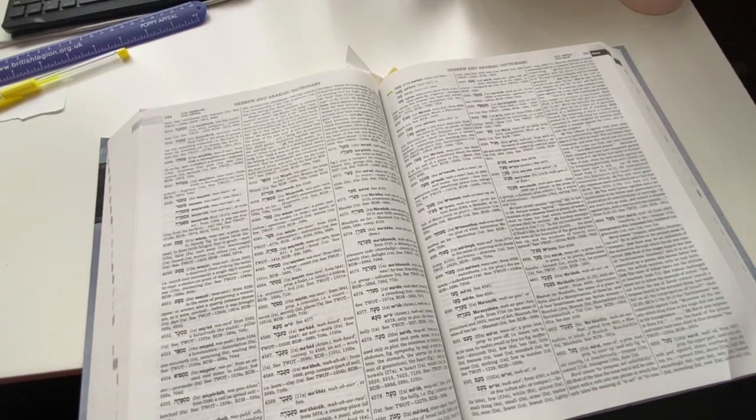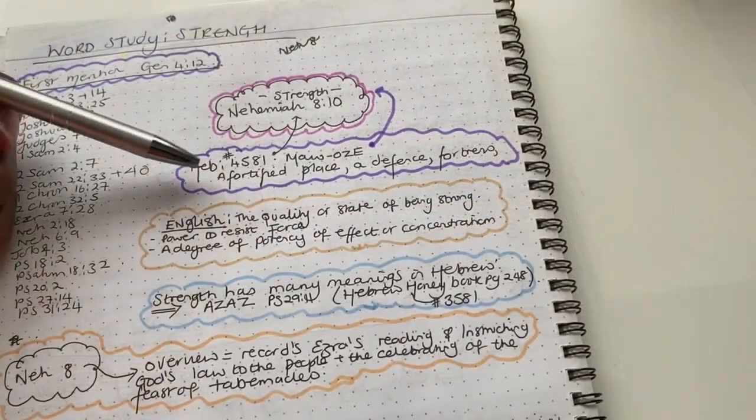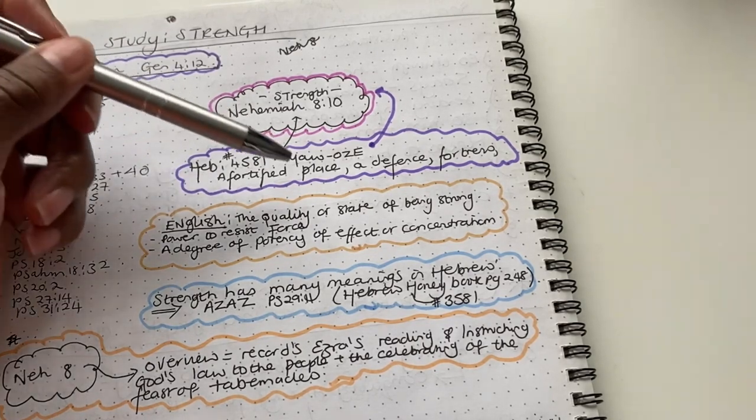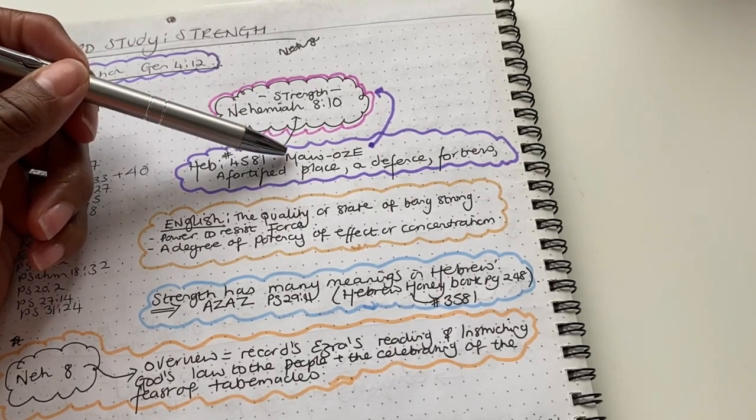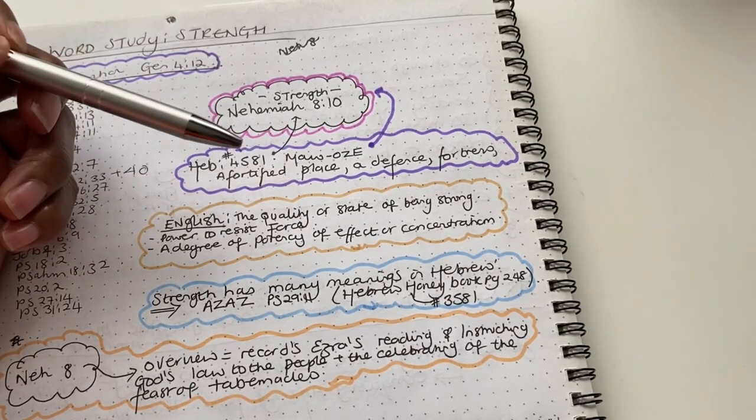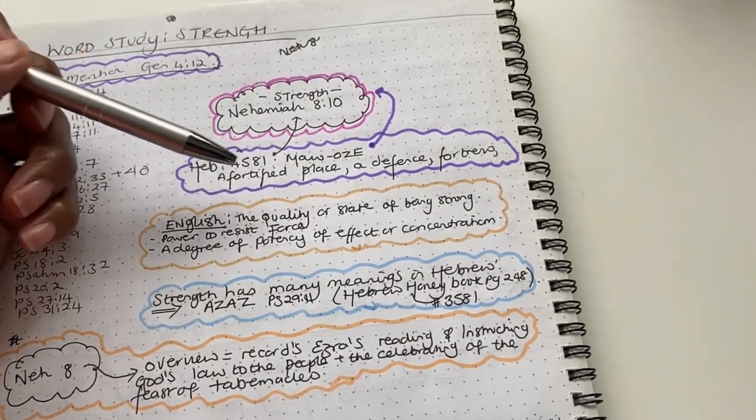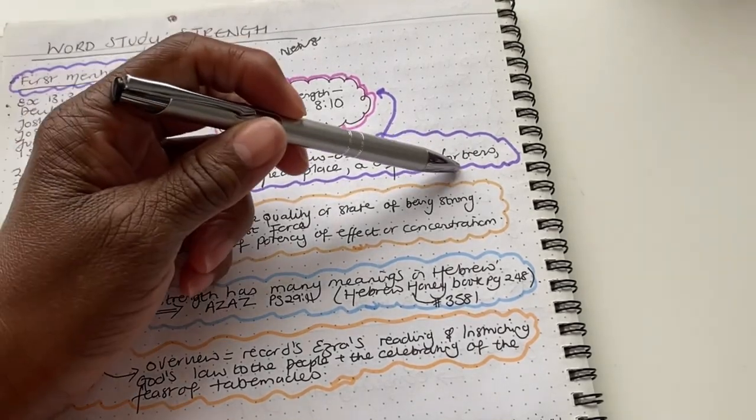So I've taken the liberty of writing out what that word means. Hebrew reference 4581 is Maoz. I'm not sure if I've pronounced that correctly. But forgive me for that. But that's the root word. And it means a fortified place, a defense, a fortress.